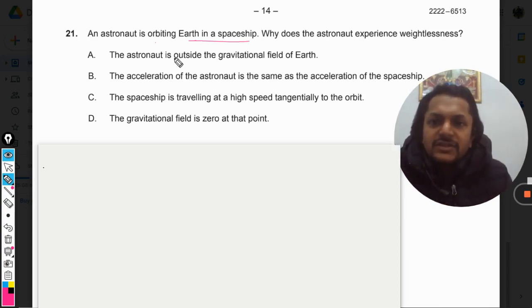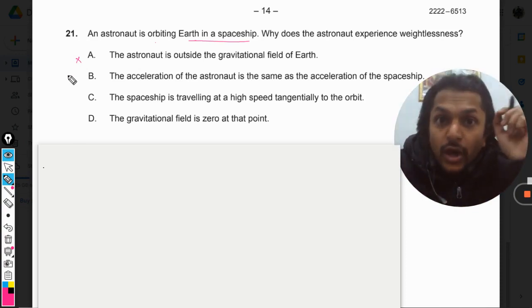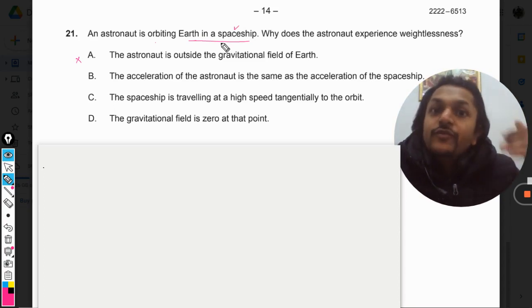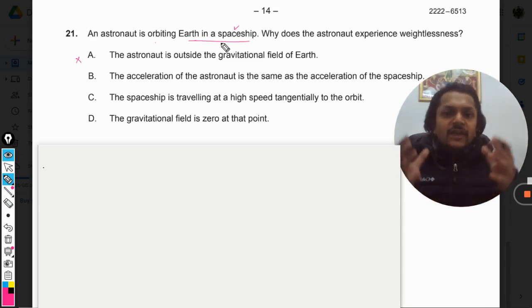Option A: The astronaut is outside the gravitational field of Earth. Not at all. Why am I saying so? Because if there is no gravity, then why is the spaceship not free to move away from the orbit of the Earth?